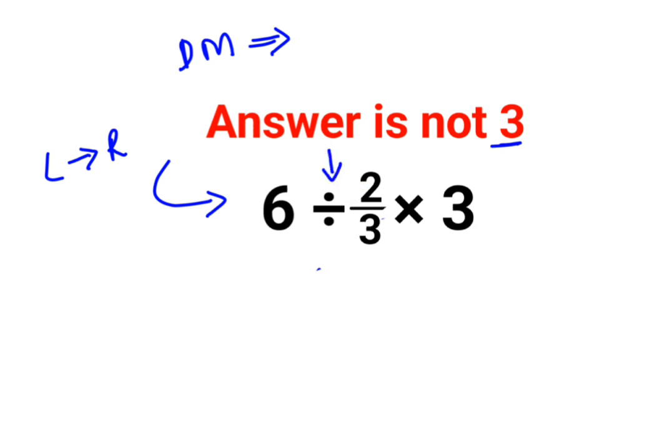So 6 divided by 2/3. Now whenever you have a division operation to be done, you need to remember the rule of KCF, where K stands for keeping the first number as it is, C stands for changing the division sign to multiplication, and F stands for flipping or taking reciprocal of 2/3, so 2/3 becomes 3/2.